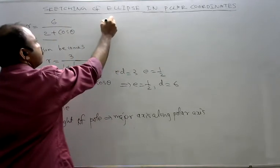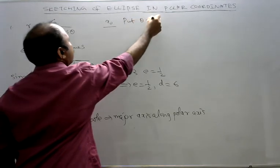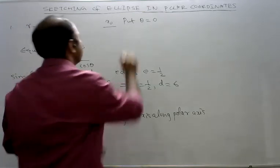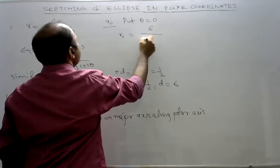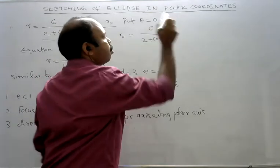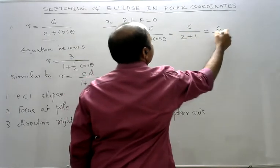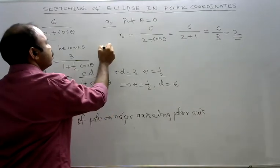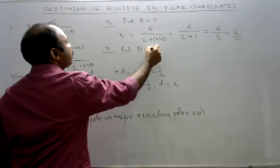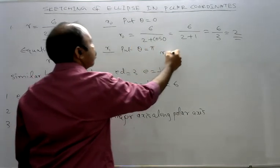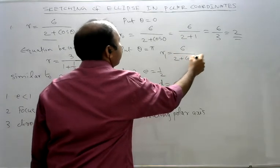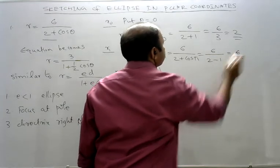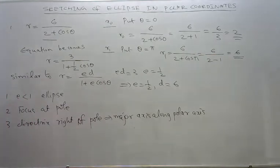Now, R0: Put theta equal to 0. Here we can substitute theta equal to 0 in this equation because they are the same equation. R0 equals 6 by 2 plus cos theta. Since cos theta equals 1, this is 6 by 2 plus 1 equals 6 by 3 equals 2. Then R1 equals 6 by 2 plus cos π. Cos π is minus 1, so 6 by 2 minus 1 equals 6. So we have R0 and R1.